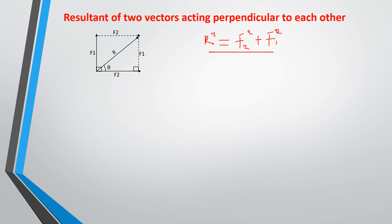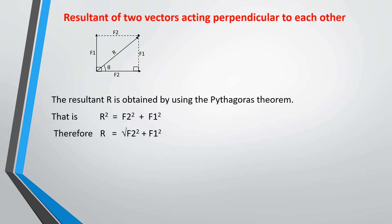So if you are looking for the resultant, you apply the Pythagoras theorem: R squared equals F2 squared plus F1 squared. Depending on the values given, you can solve for R. If you want to find the direction of the resultant, you can use trigonometric ratios — sine, cosine, or tangent — to find the direction of the resultant relative to the horizontal, depending on what the question requires.